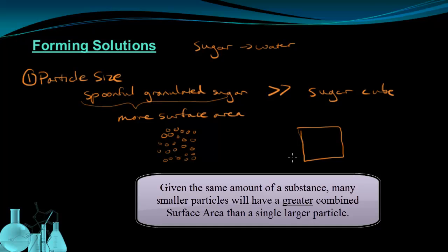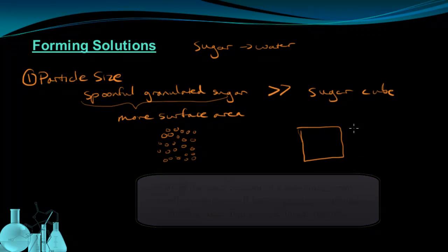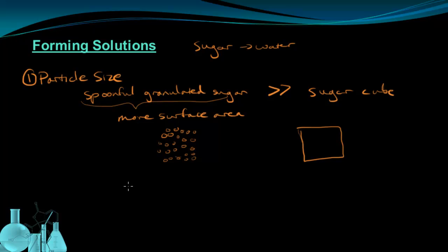So assuming that these two have the same volume, smaller particles will have more surface area than larger particles. This same idea can sometimes apply to liquids as well, although for liquids it has more to do with viscosity. Typically, viscous liquids have larger particle sizes, and those take longer to dissolve than less viscous liquids. So for liquids, less viscous is faster than more viscous, and less viscous usually means smaller molecules.